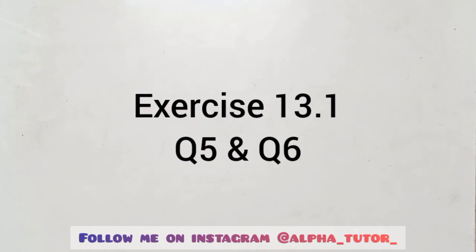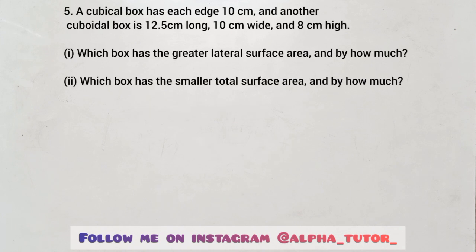We have question 5. The cubical box has each edge 10 cm, and the cuboidal box is 12.5 cm long, 10 cm wide and 8 cm height. The first part is: which box has a greater lateral surface area and by how much? The second part is: which box has a smaller total surface area and by how much?